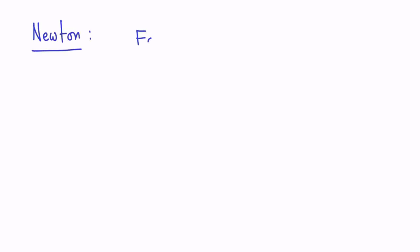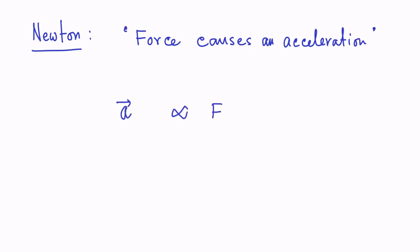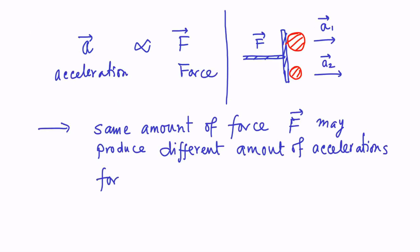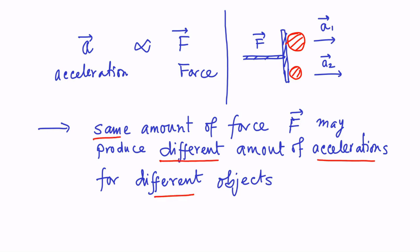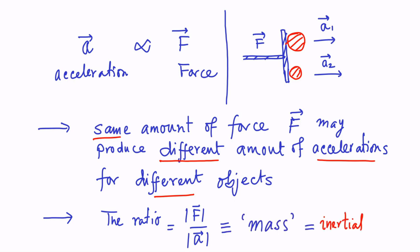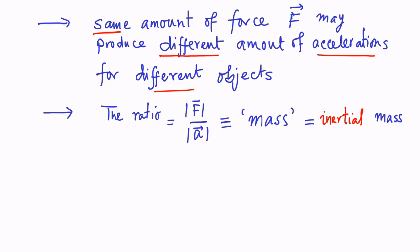We saw that force causes an acceleration for a given particle, so the acceleration is proportional to the force applied on the particle. For example, the same amount of force may produce different amounts of acceleration for different objects. Therefore we can consider the ratio of the magnitude of the applied force and the resultant acceleration of a body, and call it mass — or more precisely, inertial mass.